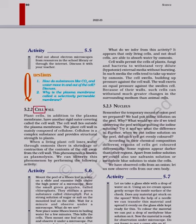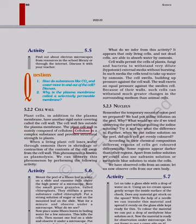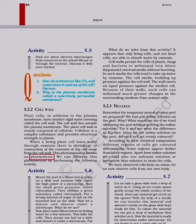5.2.2 Cell Wall: Plant cells, in addition to the plasma membrane, have another rigid outer covering called the cell wall. The cell wall lies outside the plasma membrane. The plant cell wall is mainly composed of cellulose. Cellulose is a complex substance and provides structural strength to plants. When a living plant cell loses water through osmosis, there is shrinkage or contraction of the contents of the cell away from the cell wall. This phenomenon is known as plasmolysis. We can observe this phenomenon by performing the following activity.